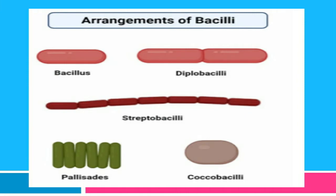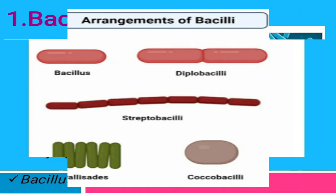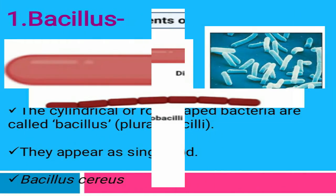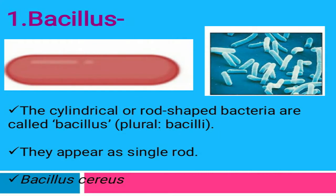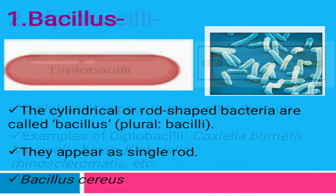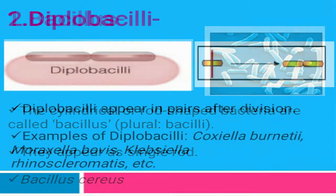Now comes the arrangement of bacillus, which is a rod-shaped bacteria. The first arrangement is bacillus — a rod-shaped bacterium that divides by binary fission. If the daughter cells exist singly, it is called bacillus. The example is Bacillus cereus.